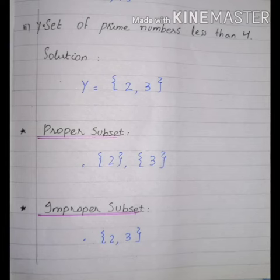Part number 2: y is equal to set of prime numbers less than 4. First, we have to write in roster form. When we write in roster form, we will write prime numbers less than 4, which are 2 and 3. We will write in roster form and write prime numbers less than 4. So less than 4, which are prime numbers, will be 2 and 3. We will close them in roster form and use comma and close them.